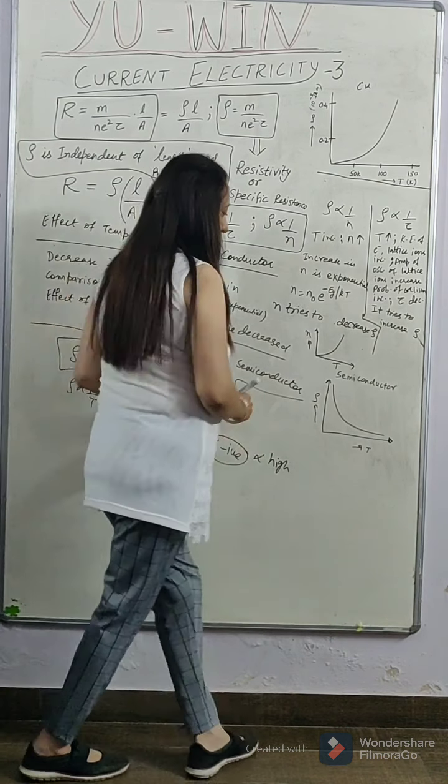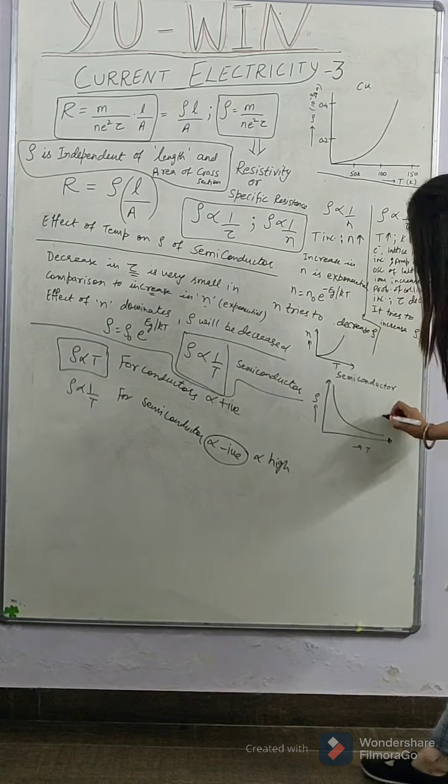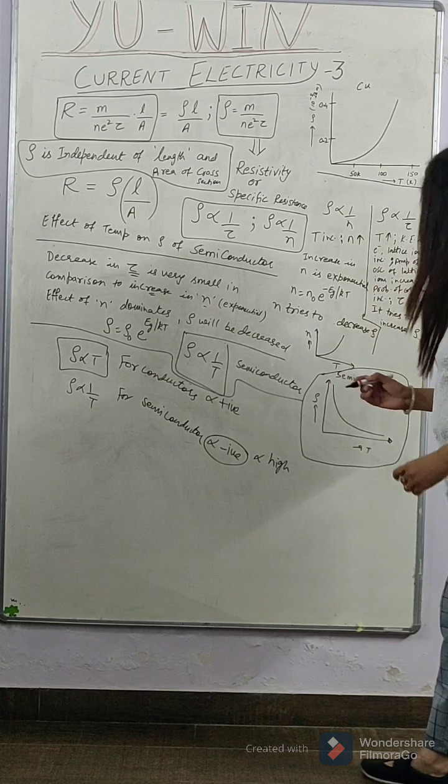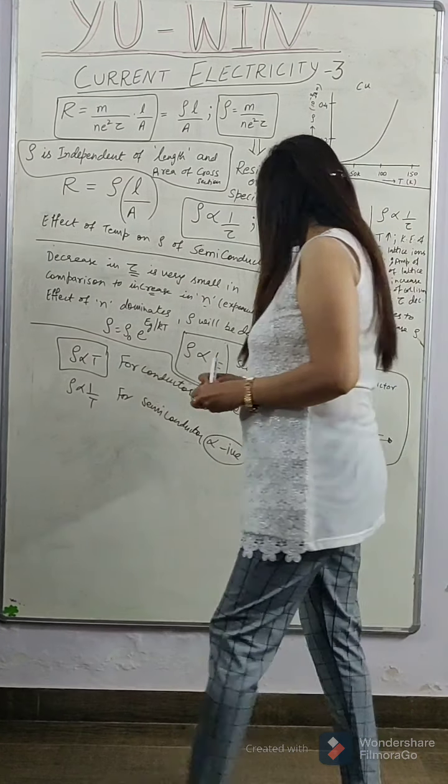So, decrease in resistivity with temperature is this. This is the graph that you need to remember. All the graphs - copper, nichrome, semiconductor - you need to remember.